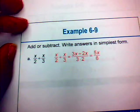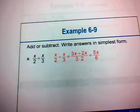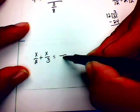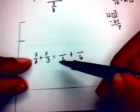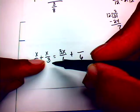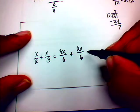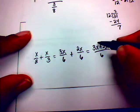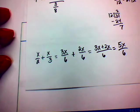Here we can add or subtract and write answers in simplest form: x over two plus x over three. The least common denominator for two and three is six. To make x over two have denominator six, multiply by three over three to get three x over six. For x over three, multiply by two over two to get two x over six. Since denominators are the same, rewrite as three x plus two x all over six. Combining like terms, three x and two x gives five x over six.